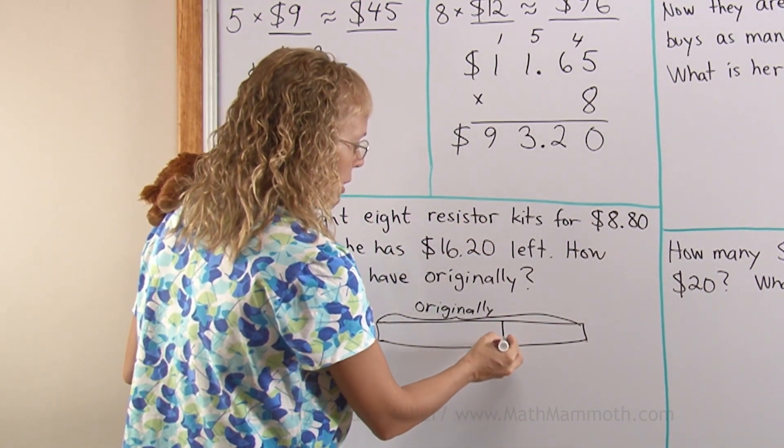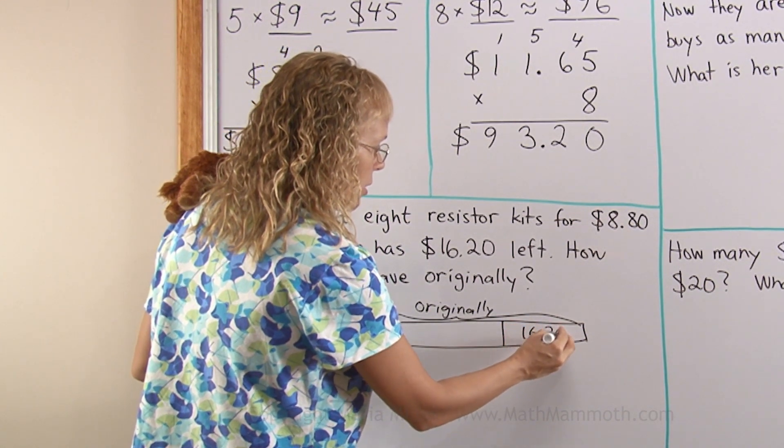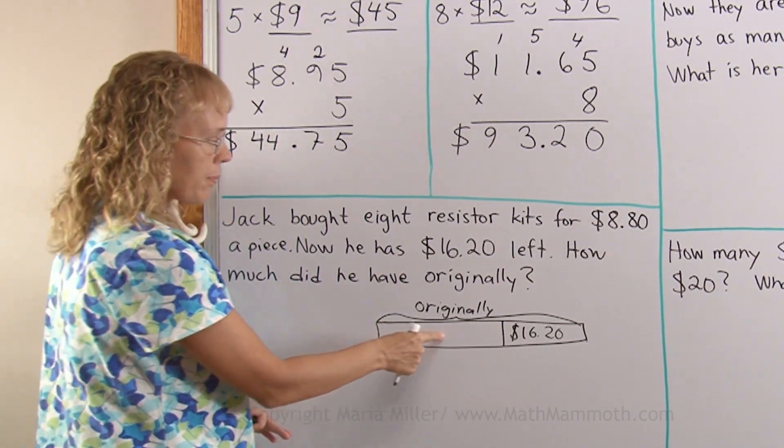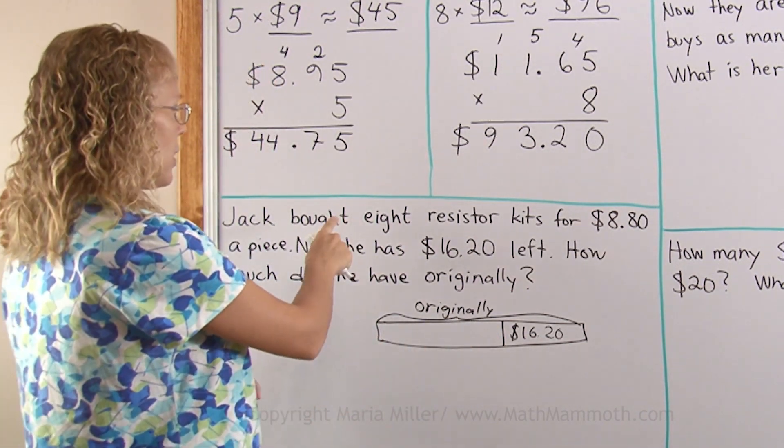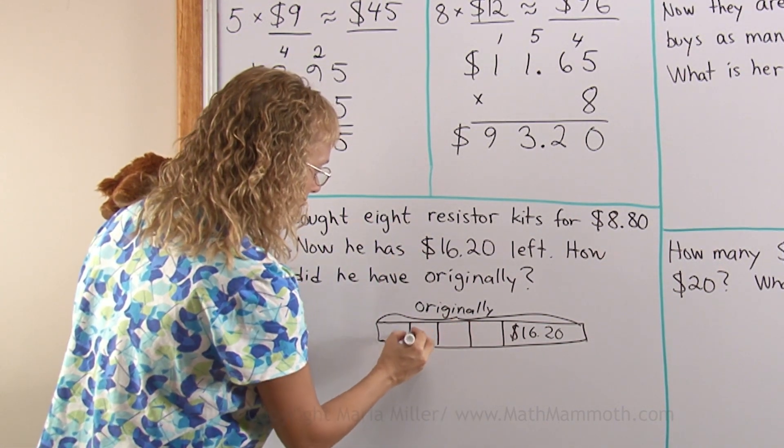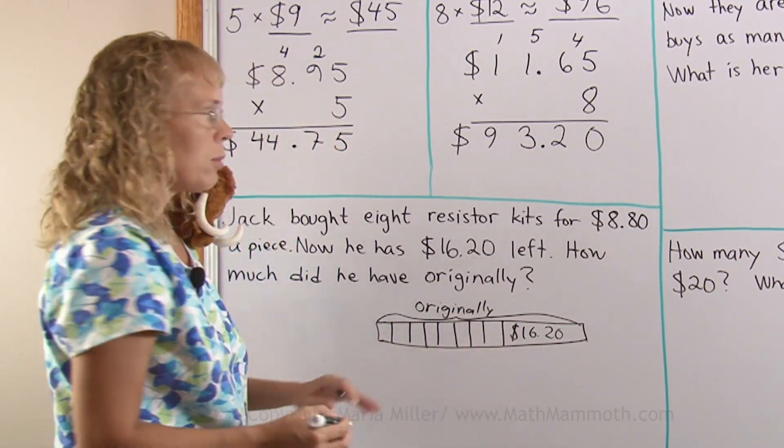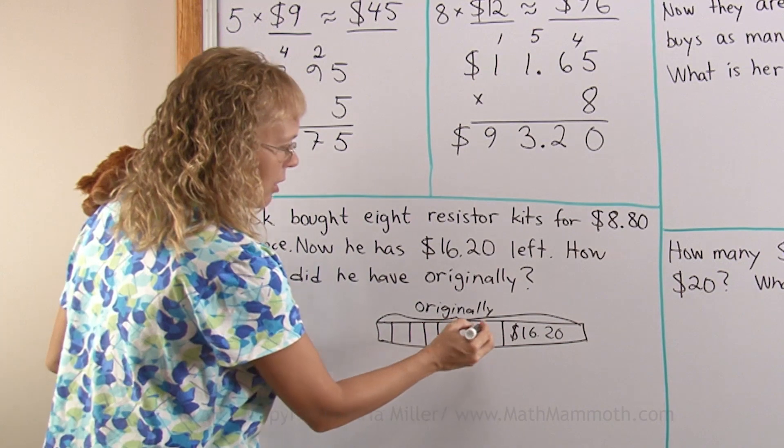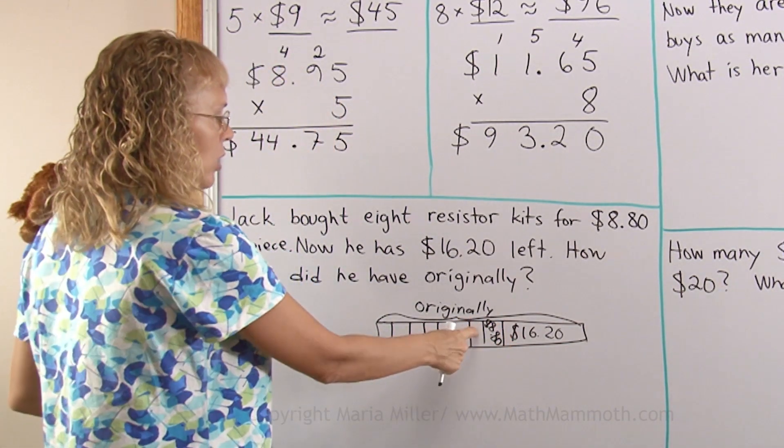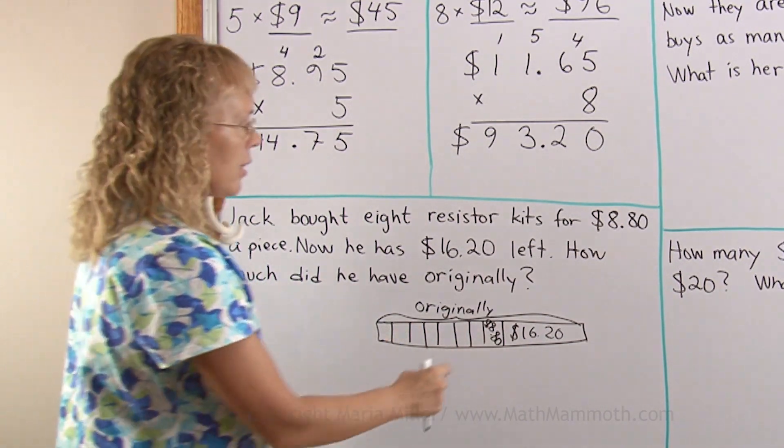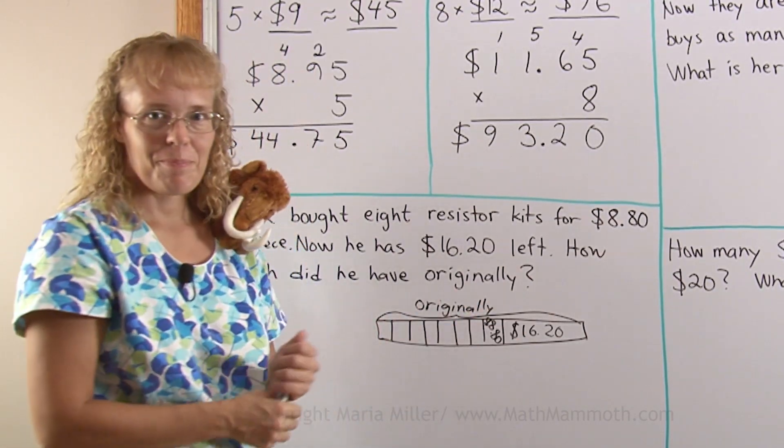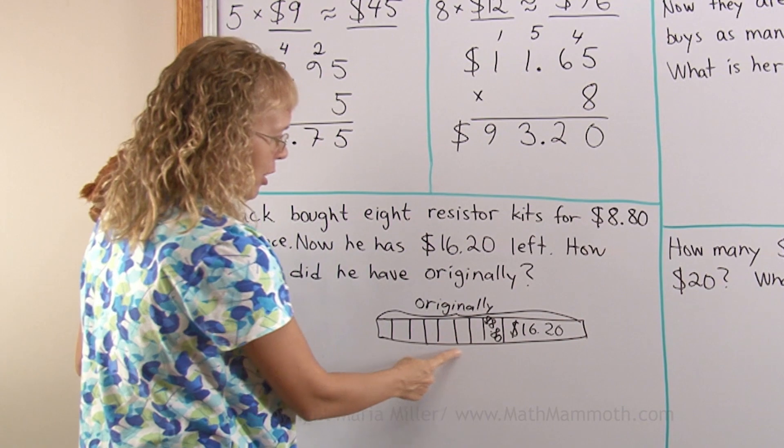He had a certain amount of money originally and then he buys these resistor kits and then he has some left. So let's first divide it into two parts. He has this much left after he buys the stuff and this is how much he spends. He spends all this money. But all this money is 8 things. He spends his money in 8 different things. So I'll divide this into 8 parts. Each part here is going to be $8.80 which I cannot really write the numbers there but you just have to imagine. Each one of these is $8.80. And then he has $16.20 left. And so now how would you find out how much he had originally? You basically would have to add all these parts, right?